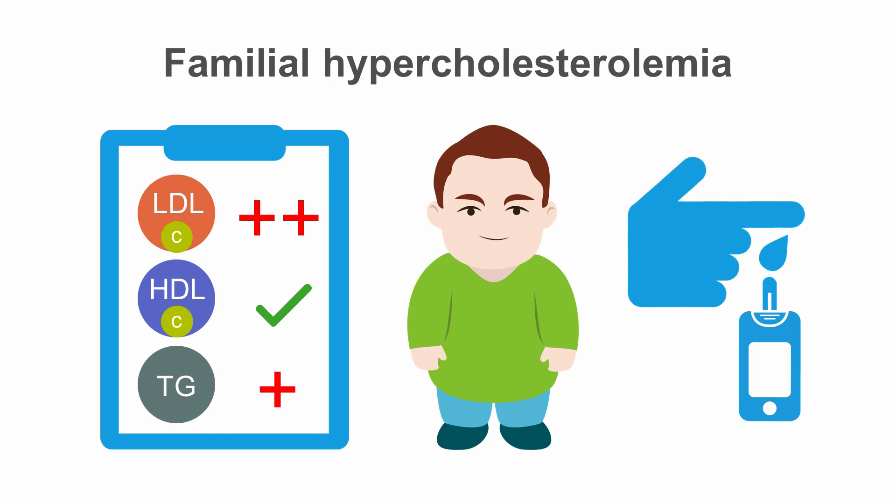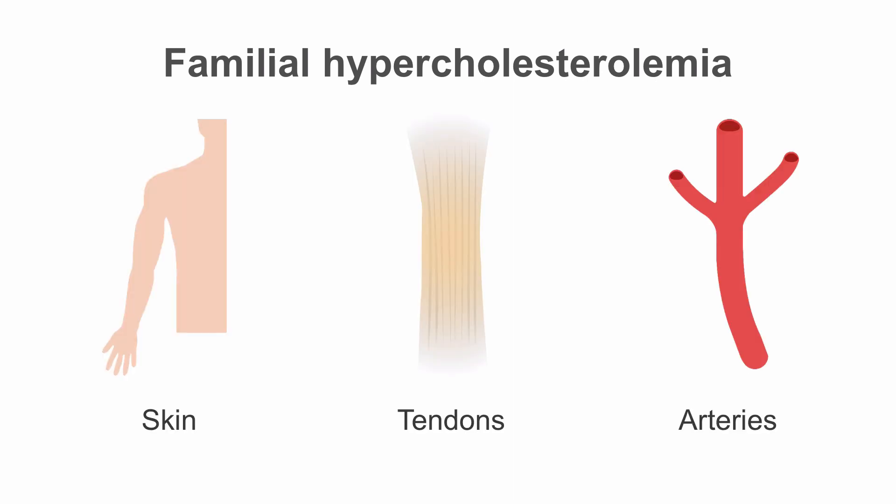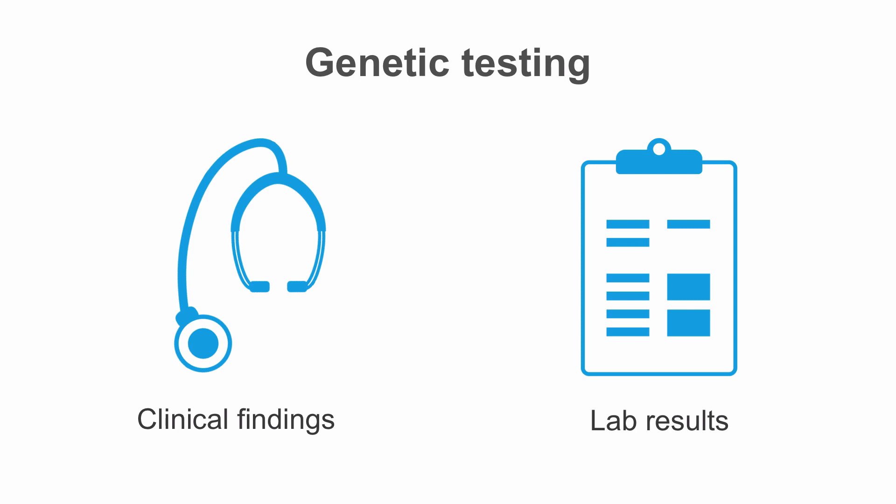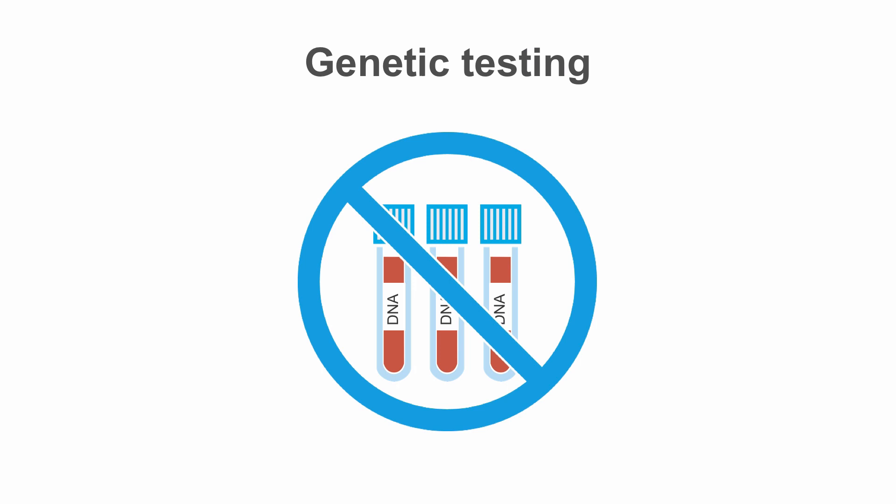The extreme elevation of LDL, especially at an early age, should make you suspicious that your patient may have familial hypercholesterolemia. Clinically, cholesterol depositions in skin, tendons, and arteries are characteristic of this disorder. The depositions in skin and tendons are called xanthoma. When clinical findings and lab results suggest familial hypercholesterolemia, genetic testing may not contribute substantially to the diagnosis and is generally not needed.